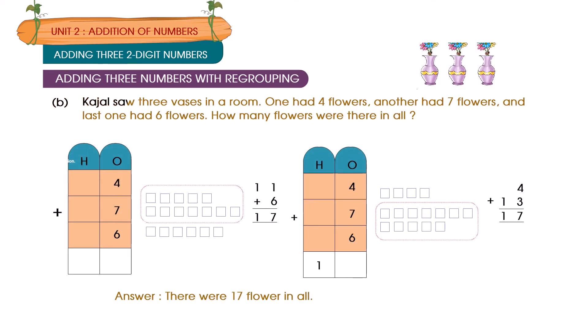Kajal saw three vases in a room. One had four flowers, another had seven flowers, and last one had six flowers. How many flowers were there in all? There were 17 flowers in all.